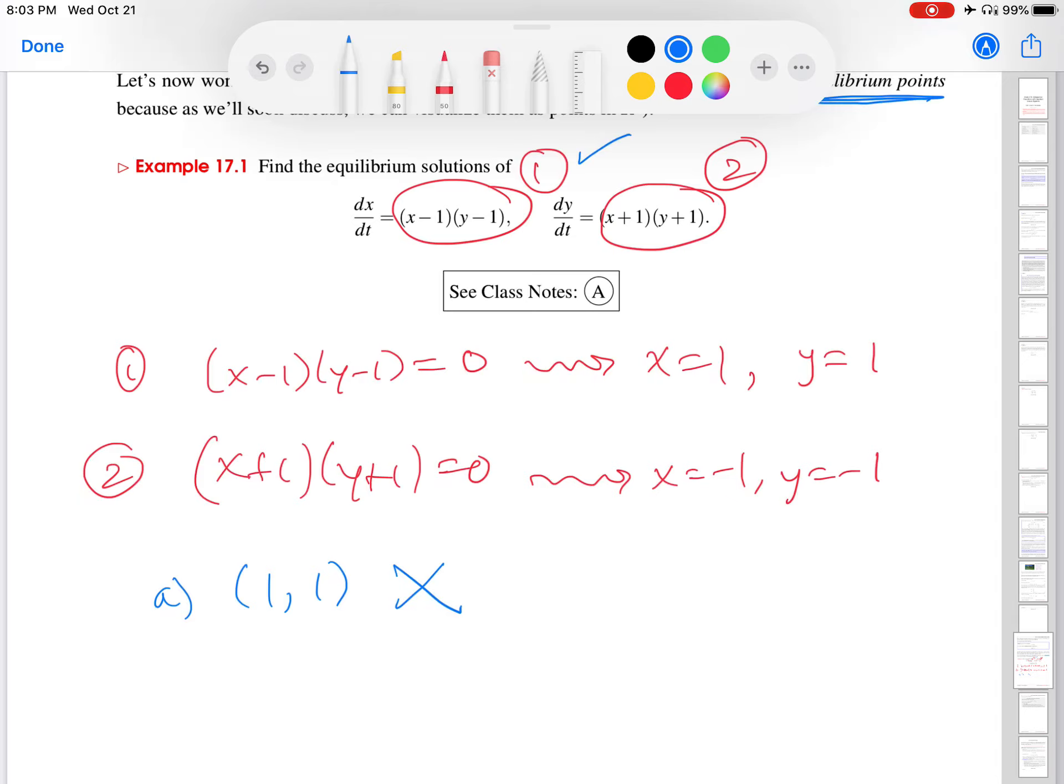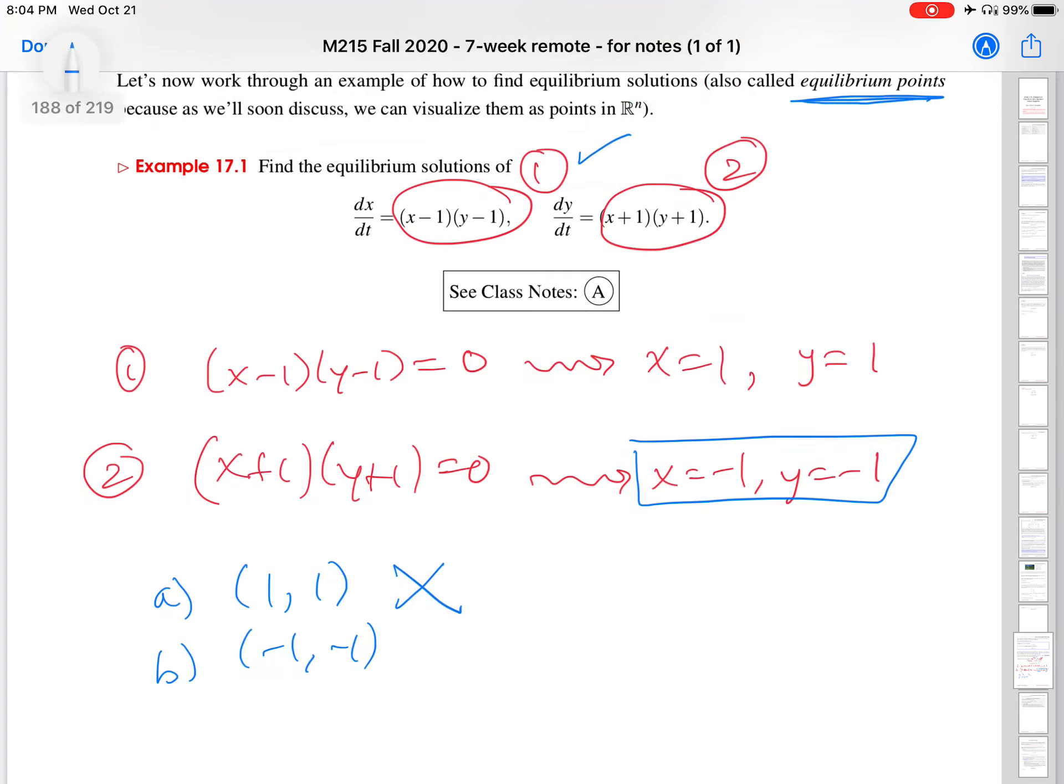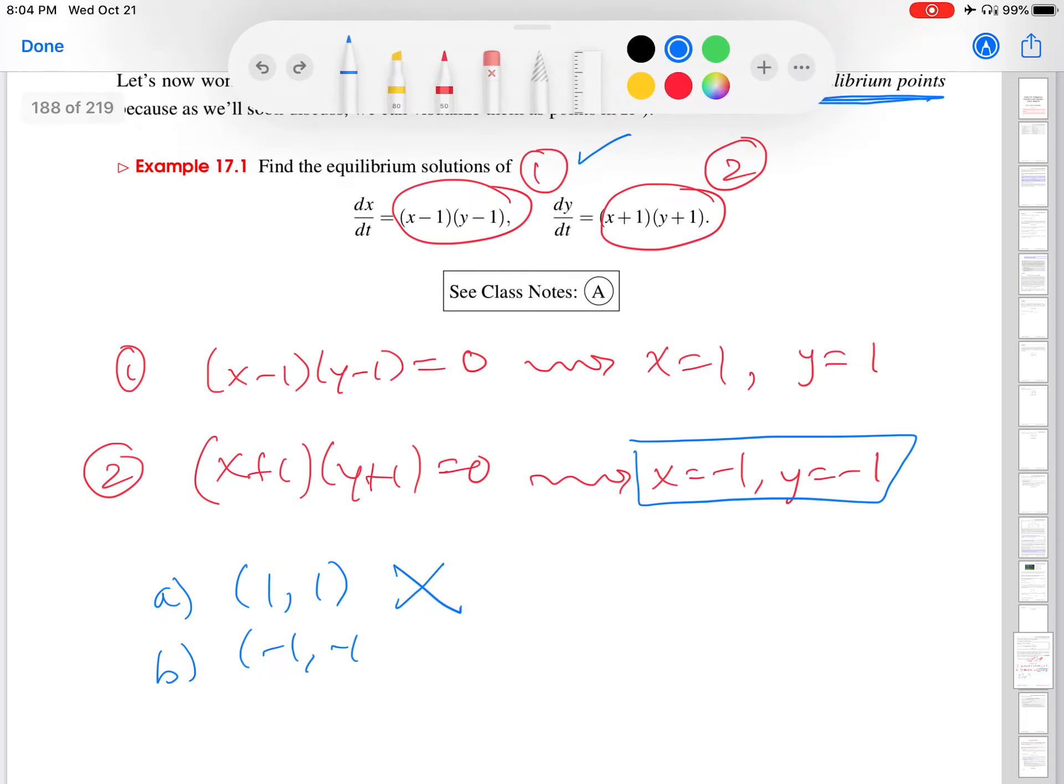Let's try this one down here. Same problem. We're trying negative one, negative one. That makes number two zero, that's how we got it, so great. But it does not make number one zero. So that also is not an equilibrium solution.